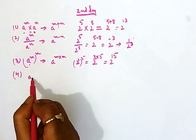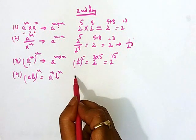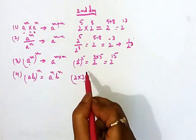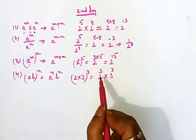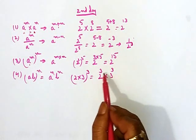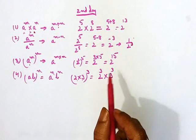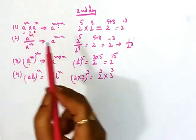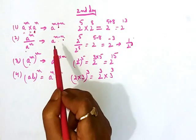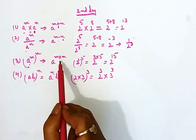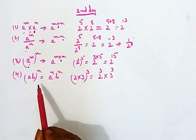Now for the fourth rule: if the bases are different, then a·b to the power n equals a^n times b^n. For example, 2 into 3 to the power q expands to 2^q times 3^q. The key point to understand: if bases are the same, then addition, subtraction, or multiplication of powers is possible. But if bases are different, those operations within the power are not possible.